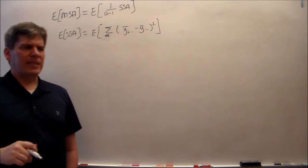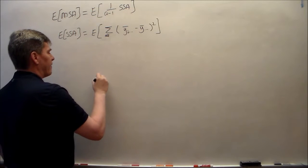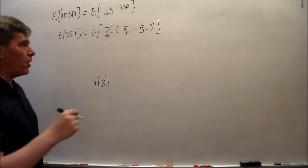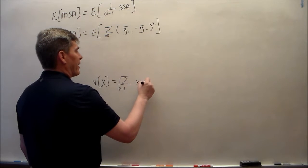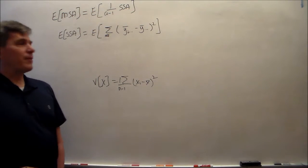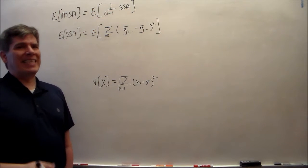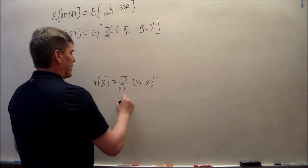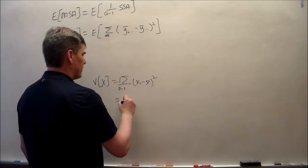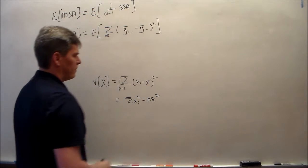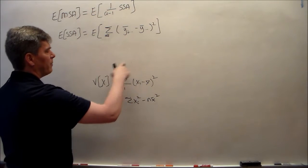Remember back in your first stat class when you were calculating variances. The formula for the variance of x — and I'm using x here because it's a throwback to a long time ago — was 1 over (n minus 1) times the sum of (xᵢ minus x̄) squared. That's how it was introduced: a deviation, you squared the deviations, you found some sort of average squared deviation. But when you actually did the calculations, there was a computational equivalent form. We're going to apply this concept here.